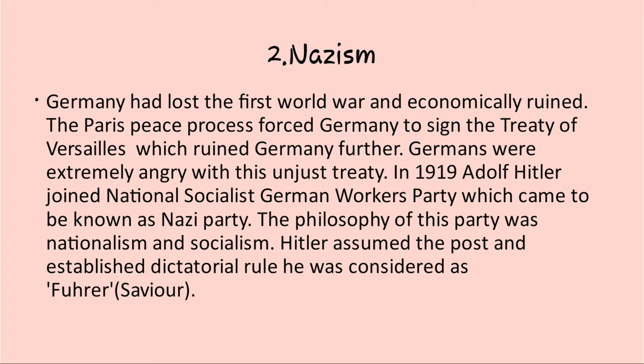The second point is Nazism in Germany. Germany had lost the First World War and was totally ruined, both economically and otherwise. The Paris Peace Process had compelled Germany to sign the Treaty of Versailles. Germans were extremely angry with this unjust treaty. During that time, Adolf Hitler joined the National Socialist German Workers' Party, which later came to be known as the Nazi Party. The party had the philosophy of nationalism and socialism. After the death of the German president, Hitler assumed the post and established dictatorial rule.